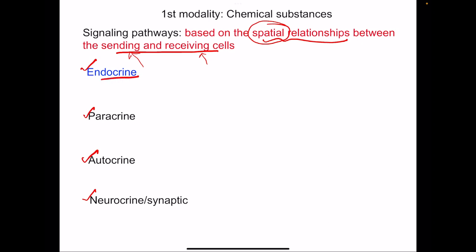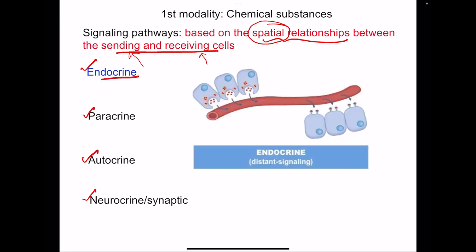Endocrine signaling is where the sending and receiving cells are present much farther apart. The sending cell releases the chemical into the blood, the chemical travels via blood, and reaches the receiving cells — which may be varied cells present in different organs. This is known as endocrine signaling or distant signaling.